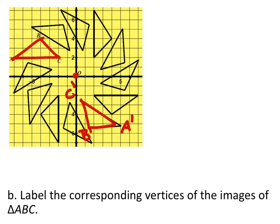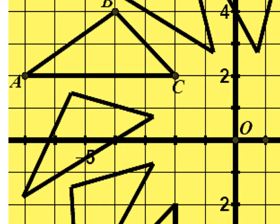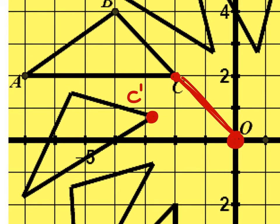We could say the triangles are images of other images, but that may be confusing. The question asks about the relationship between C and its images to the center of rotation. If we connect a line from C to the center of rotation — the origin — and then connect a line from C prime to the center of rotation, we have an angle between them.